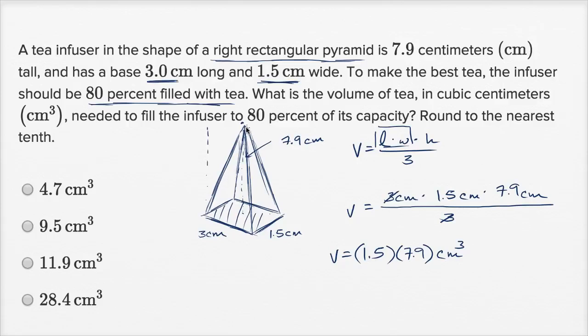But we want to know what 80% of its capacity is, because that's how much tea we need. So we want to multiply this times 80%, so you would multiply 0.8 times 1.5 times 7.9 centimeters cubed. And let's see, 0.8 times 1.5, that would be 0.8 plus 0.4. So this part is going to be 1.2 times 7.9 centimeters cubed.